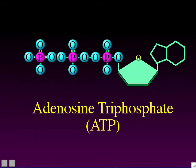ATP is a high energy molecule found inside cells. It stands for adenosine triphosphate. You don't have to remember the full structure of the ATP molecule, but it has a tail of three phosphate ions — the first phosphate ion, second phosphate ion, and third phosphate ion.